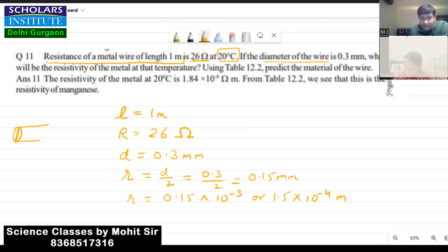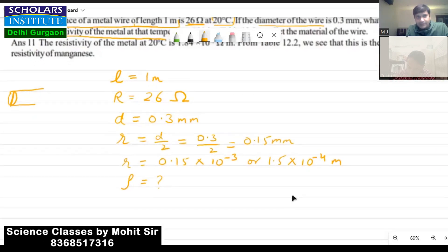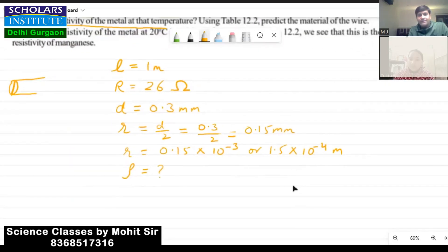So this is our radius. Resistivity needs to be found, okay. Rho, this is the symbol for resistivity, it is called as rho. So they are asking what will be the resistivity of the metal wire, so how do we find it.